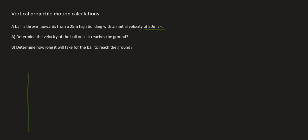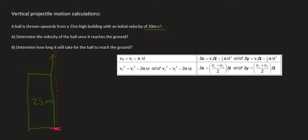So, what we have now is a building that is 25 meters tall. If you have an object that is going to move from the top of a building, it's going to go up, it's going to turn around and it's going to come down.